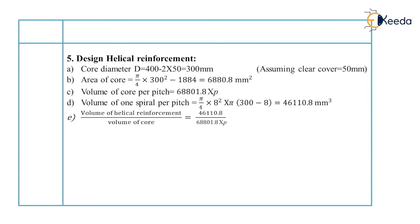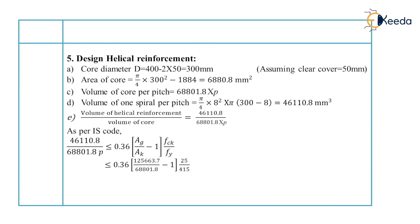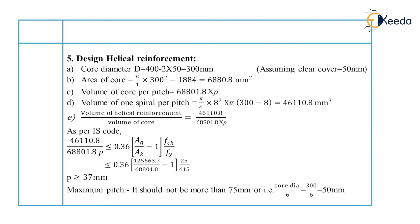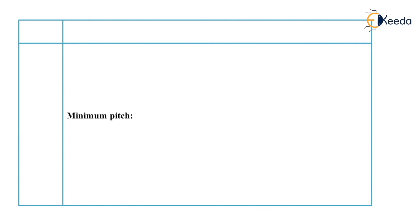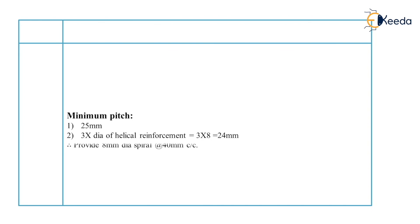Now we will check the ratio as per IS code. Volume of helical reinforcement upon volume of core should be less than or equal to 0.36 into (Ag upon Ak minus 1) into (fck upon fy). From that, we can calculate the pitch value, and the pitch is equal to 37 mm. The maximum pitch should not be more than 75 mm or core diameter upon 6. Core diameter is 300 mm upon 6 equals 50 mm. The minimum pitch is 25 mm or 3 into diameter of helical reinforcement, which is equal to 24 mm. Therefore, we will provide 8 mm diameter spiral at 40 mm center to center.